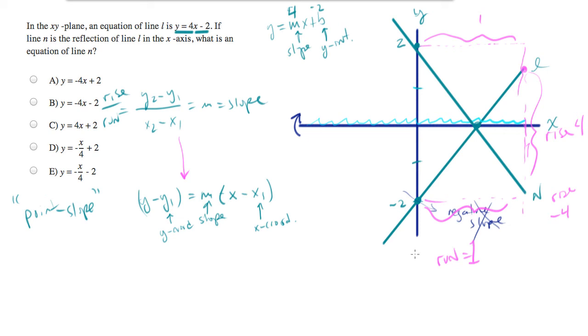So if the slope of L is equal to 4, the slope of N should be negative 4. Notice that these are simply negative versions of one another. And that will always be the case if you reflect across the x-axis.